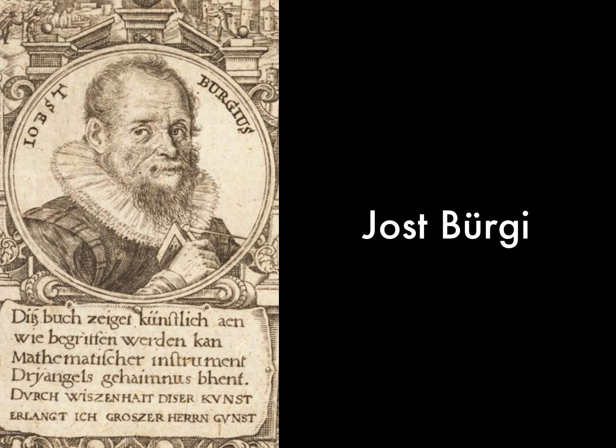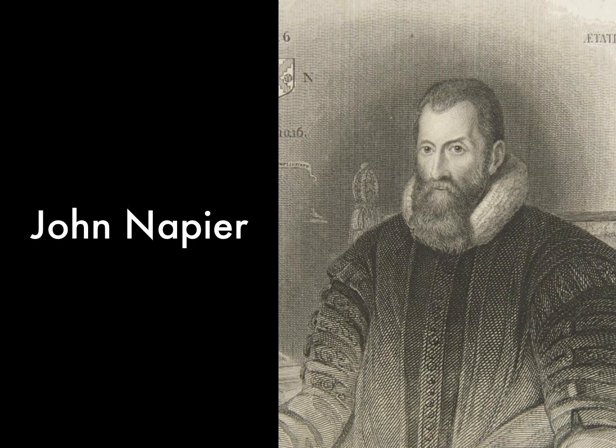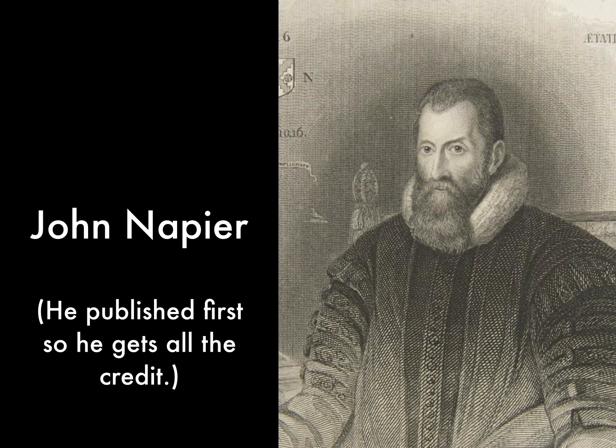It turns out that Yost wasn't the only guy thinking about these ideas around 1600. A Scottish nobleman named John Napier had pretty much the same idea. He didn't just call them the red numbers, he called them logarithms.